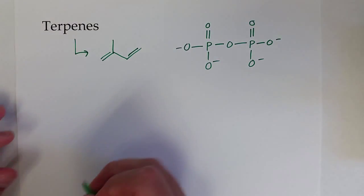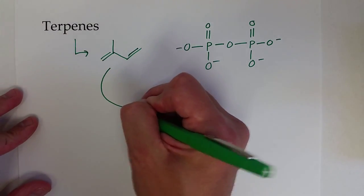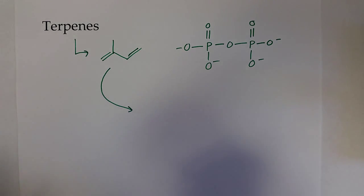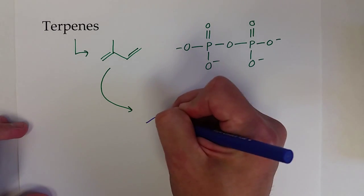When we link these up - isoprene to the pyrophosphate group - what they would create are these types of structures.